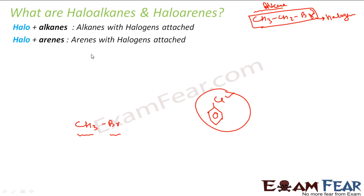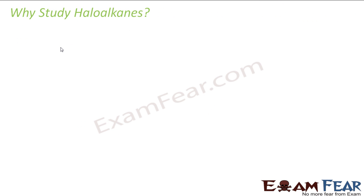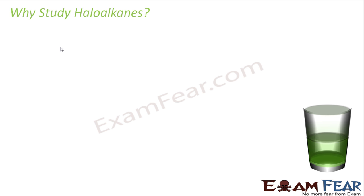Pretty easy — just by the name you can say haloalkane is the one which has halogen and alkane, and haloarene is the one which has halogen and arene. Now before you start the chapter, the question is: why should we study haloalkanes and haloarenes?